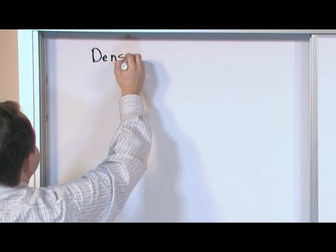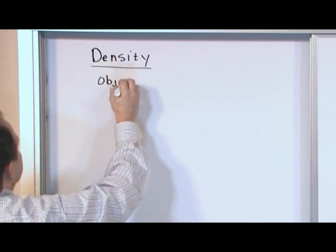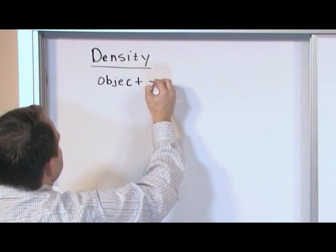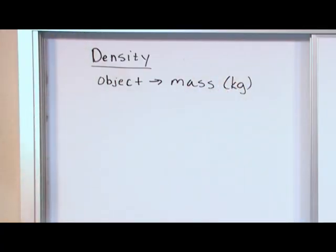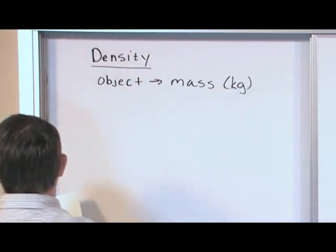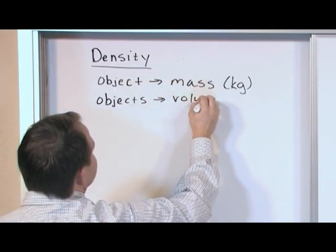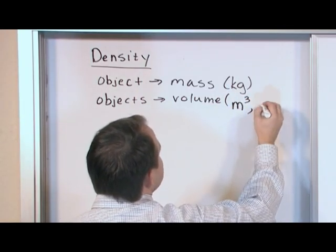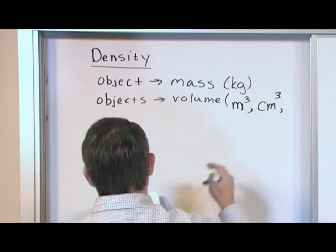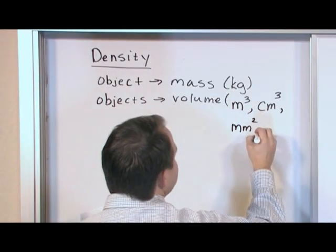So let's put some numbers to it. Objects have mass — measured in grams, kilograms, or other units of mass. Objects also have a volume. Volume can be measured many ways: cubic meters, cubic centimeters, cubic millimeters — these are all the same concept, just different units.